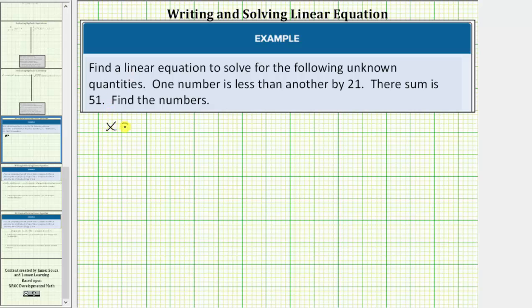Let's let x equal the larger number. And now we need a variable expression for the number that is twenty-one less than the other. Well if x is the larger number, then x minus twenty-one will be the number that is twenty-one less than the larger number.